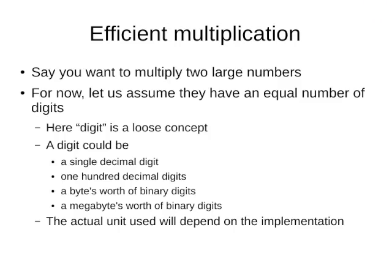Let's say you want to multiply two large numbers, and for now let's assume they have an equal number of digits. This is a bit technical, but note that a digit here is somewhat of a loose concept.